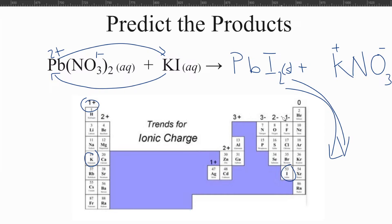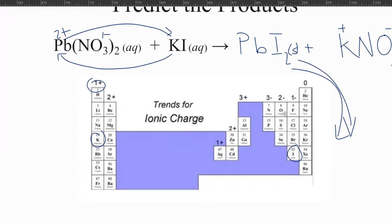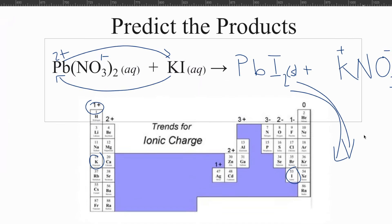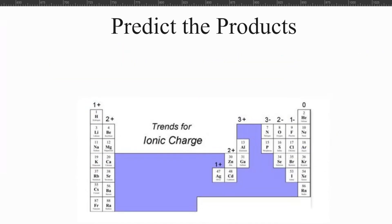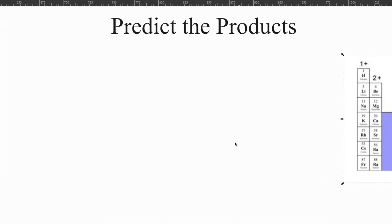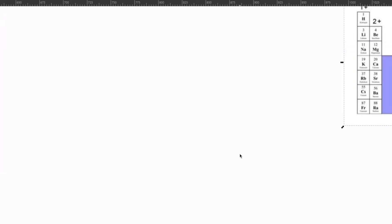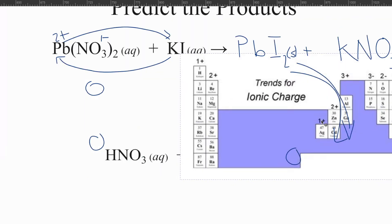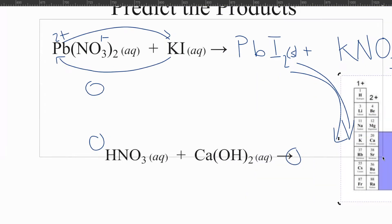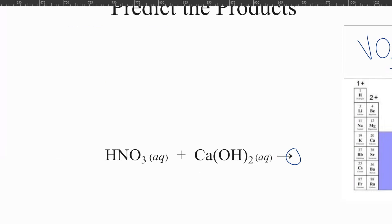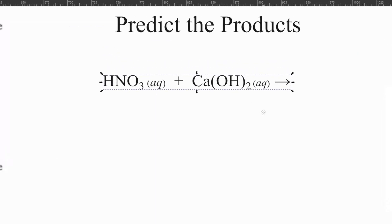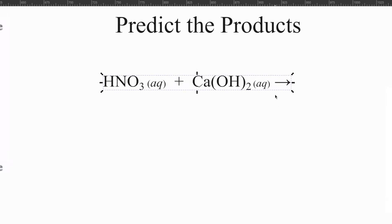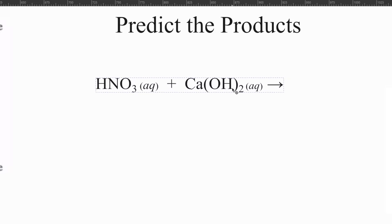Let's do one more. So if you can do these, if you're doing these and you're getting these right, you're doing really well. Because I can tell you from teaching my students, they can kind of do the separate tasks, but when you give them that predicting the products, that kind of makes their brains break. So give this a try. See if you can predict the products of this reaction. HNO3 plus Ca(OH)2. It is a double displacement, but it's a special type, so it might trick you.